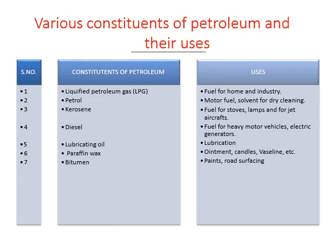This is a table showing the various constituents of petroleum and their uses. Liquefied petroleum gas, or LPG, is fuel for homes and industries. Petrol is used as motor fuel and as a solvent for dry cleaning. Kerosene is used as fuel for stoves, lamps, and jet aircraft. Diesel is used for heavy motor vehicles and electric generators. Lubricating oil is used for lubrication. Paraffin wax is used in ointments, candles, and vaseline. Bitumen is used in paints and road surfacing.